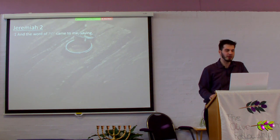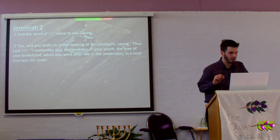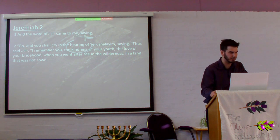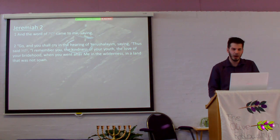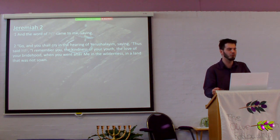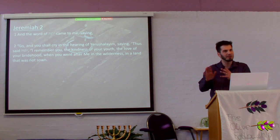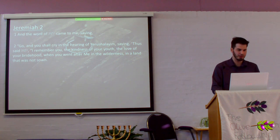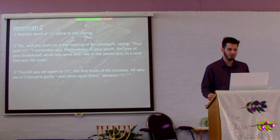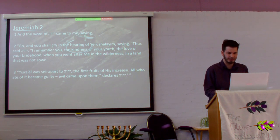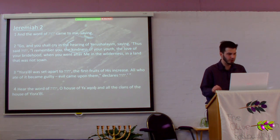In Jeremiah 2 it says: 'The word of Yah came to me saying, Go and cry in the hearing of Yerushalayim, saying, Thus says Yah: I remember you, the kindness of your youth, the love of your bridehood, when you went after me in the wilderness, in a land that was not sown.' So he's pointing back to the Exodus and Mount Sinai. Yisrael was set apart to Yah, the firstfruits of his increase — all who ate of it became guilty, evil came upon them, declares Yah.